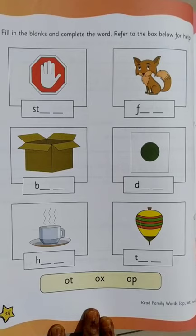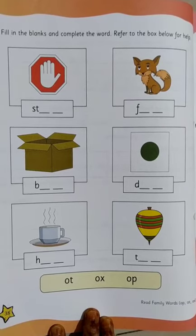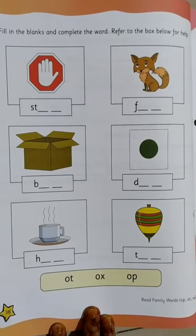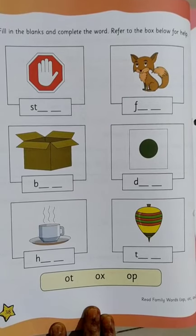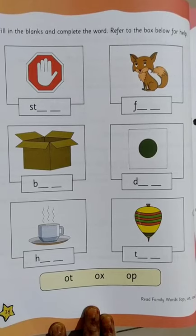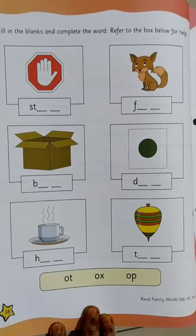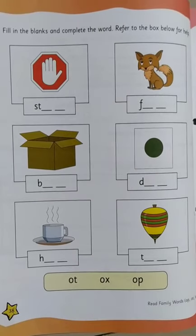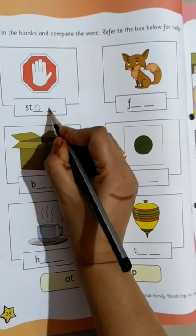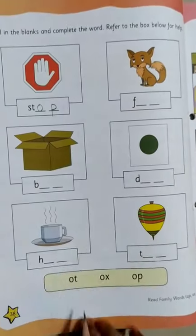Now can you see the first picture? It is a sign with a hand. Which sign is this? It is a sign to stop. So what is written? St is written, and we need op. So let's write O and P. O and P. Stop.